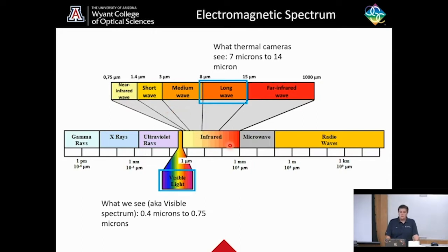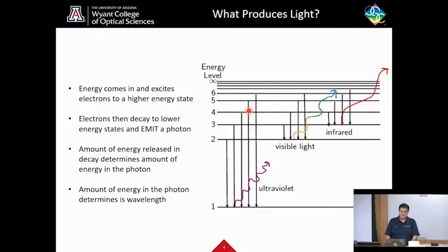When you get into longer wavelengths, you start getting into what's called the infrared. Thermal cameras see a specific part of the infrared spectrum called the thermal IR, which is from 7 microns to 14 microns. This is what we will be discussing today.